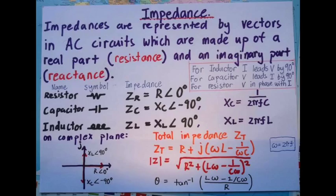The expressions for impedance for each of the components—resistor, capacitor, and inductor—are given here, and their angles are based upon the relationship between the voltage and current through each component.